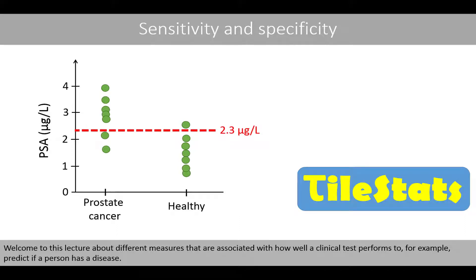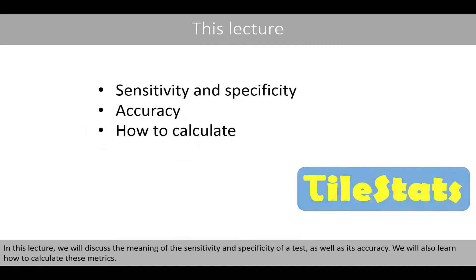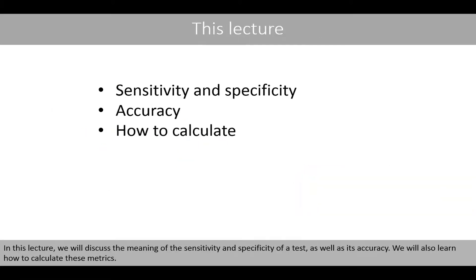Welcome to this lecture about different measures associated with how well a clinical test performs, for example to predict if a person has a disease. In this lecture we'll discuss the meaning of the sensitivity and specificity of a test, as well as its accuracy. We'll also learn how to calculate these metrics.